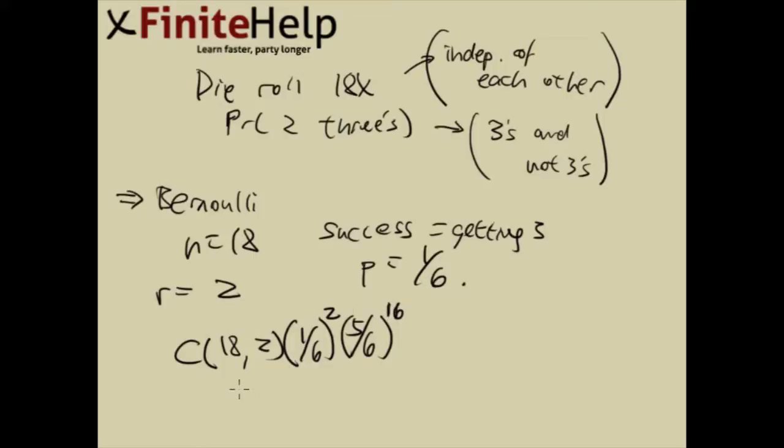And then you type that in the calculator, which I will do that right now. 18 choose 2 is going to be 153. Take that times 1/6 to the square times 5/6 to the 16. And that comes out to 0.2299.